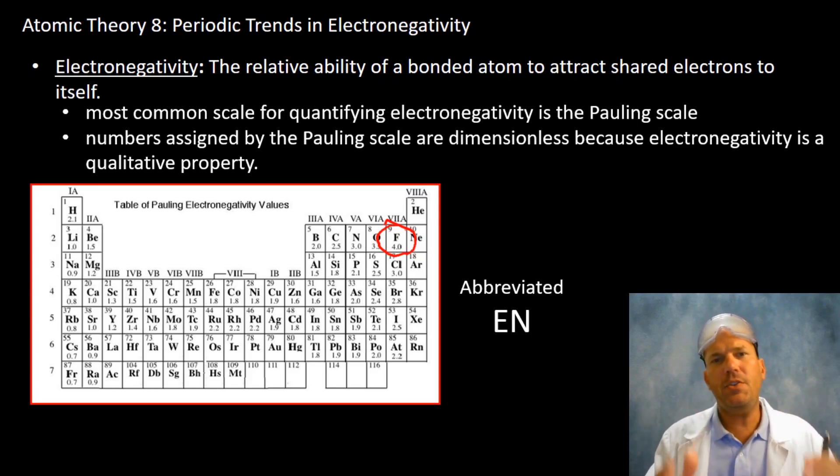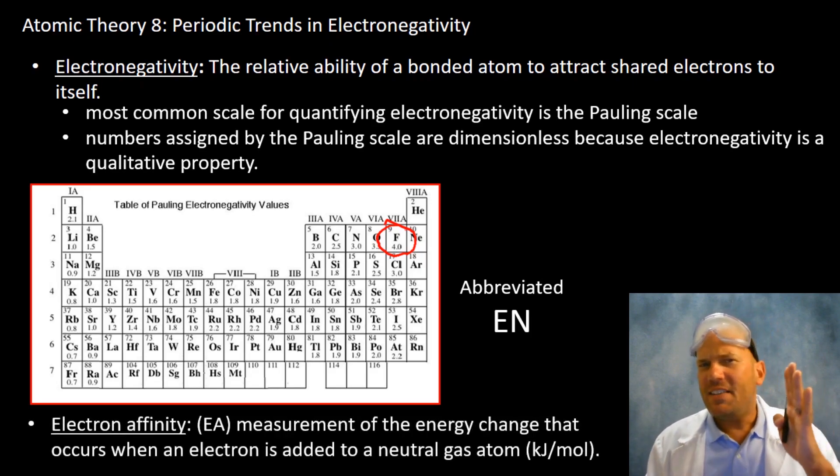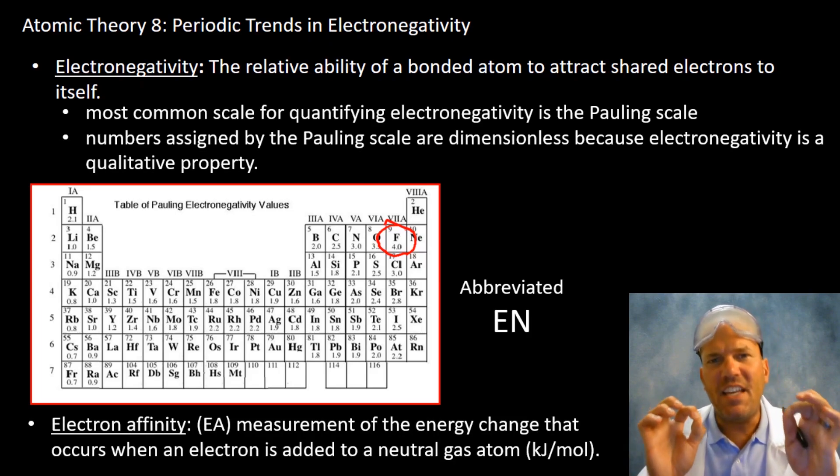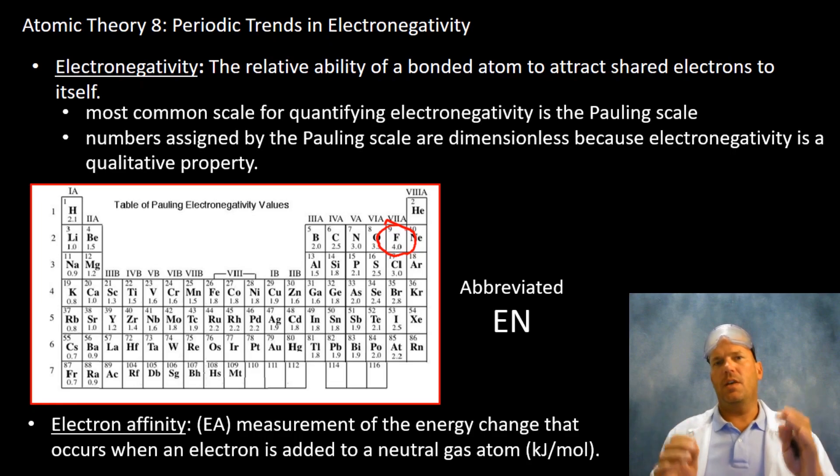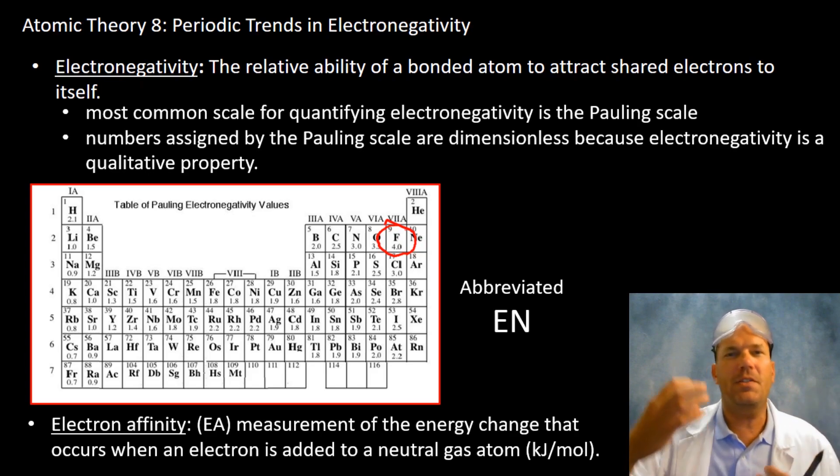I want to distinguish between two terms that are often used interchangeably: electronegativity and electron affinity. Electron affinity is a measurement of the energy change that occurs, and so this will be a topic we'll discuss several units from now. But I wanted to be sure to distinguish between these two because they're often used interchangeably when in fact there is a difference between them.